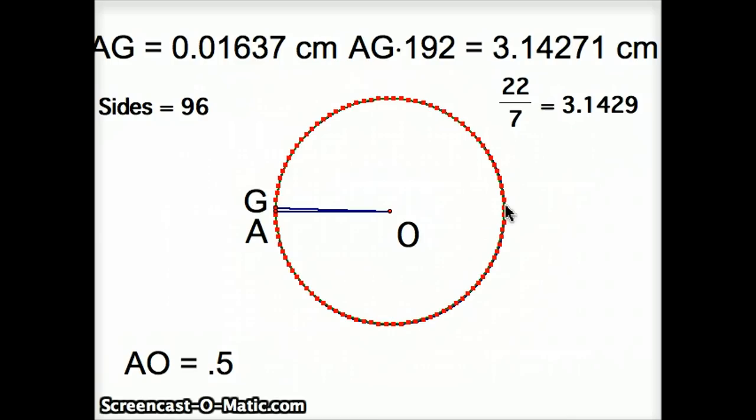He actually doesn't stop there. He stops this approach, but then he does this exact same thing again, or he does a similar thing, using polygons that are inscribed inside the circle to get that pi also has to be bigger than 3 and 10 over 71.